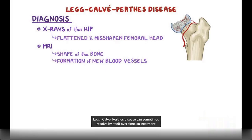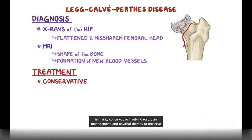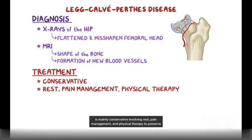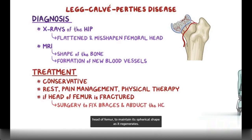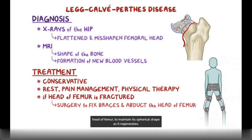Legg-Calvet-Perthes disease can sometimes resolve by itself over time, so treatment is mainly conservative, involving rest, pain management, and physical therapy to preserve joint mobility. If the head of the femur is very fractured, surgery may be needed to affix braces and abduct the head of the femur to maintain its spherical shape as it regenerates.